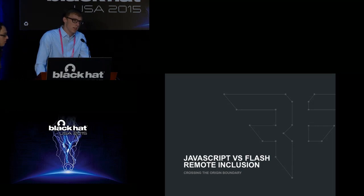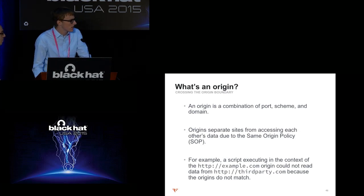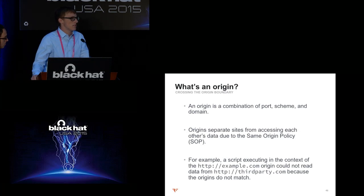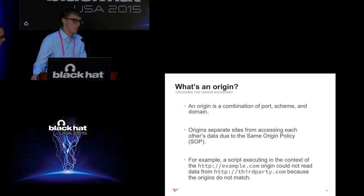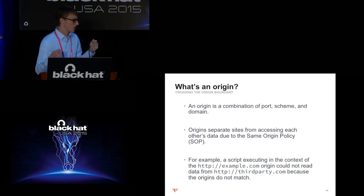To explain why Flash is weird, we compare it to JavaScript. Origins are a combination of port, scheme, and domain. If my blog is open in one tab and you open Gmail in another, my blog shouldn't be able to read your emails — and it can't, because they have separate origins. Cross-origin requests violate the same-origin policy, which is a critical component of web security. The difference between JavaScript and Flash is that they're essentially opposite. When you source JavaScript from a third-party domain via an external script tag, it executes in the context of the page that loaded it, not the site that hosts it. Flash completely turns this on its head.